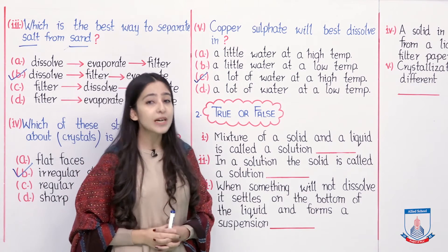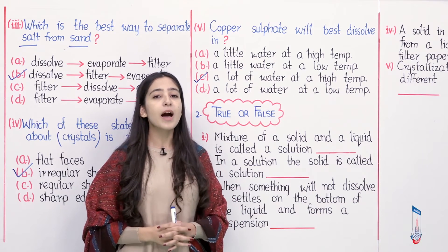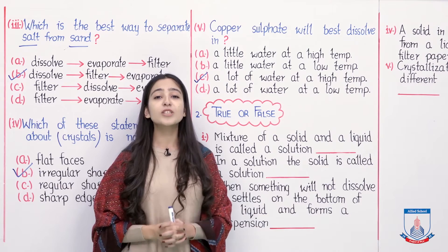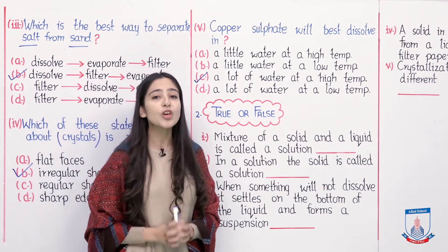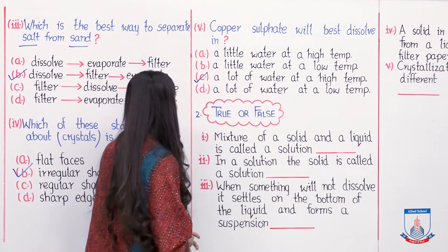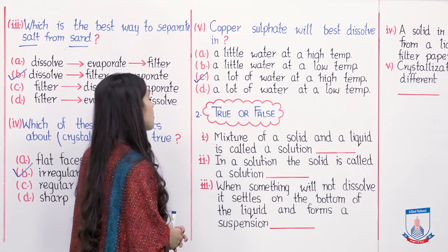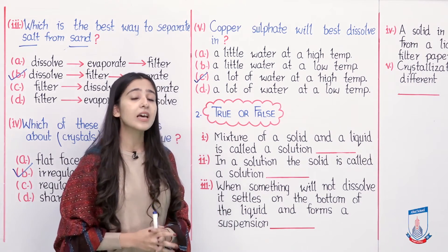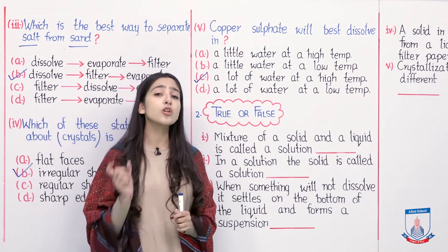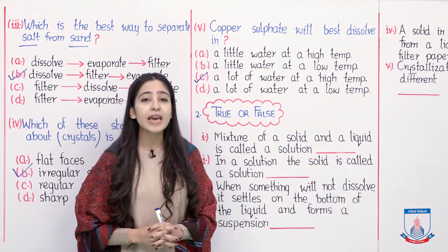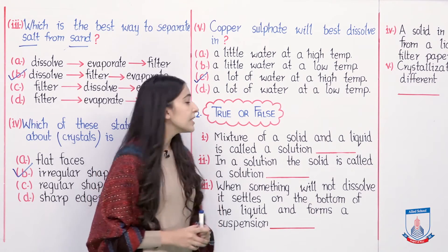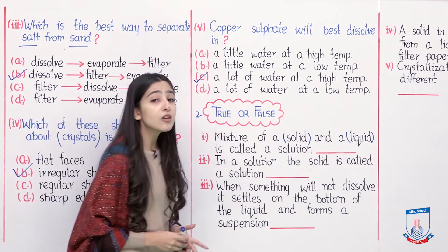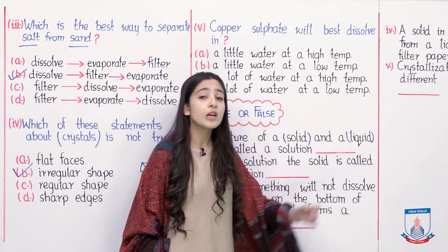These were the answers to question 1, the multiple choice questions. Now we are moving to question number 2, which is true or false. I will read a statement and you will decide if it is true or false. Statement number 1: a mixture of a solid and a liquid is called a solution. A mixture can be divided into solution and suspension. The solution definition is not limited to solid dissolved in liquid — a solution can be of any kind. Gas can also be dissolved in liquid and we call it a solution too.